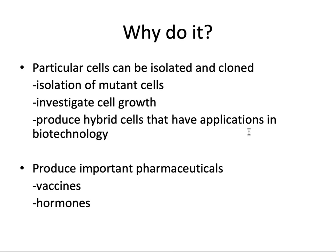Why do we do cell culture? A particular cell can be isolated and cloned. Uses include isolation of mutant cells, investigating cell growth, producing hybrid cells with applications in technology, and producing important pharmaceuticals like vaccines and hormones. We use cell cultures to check the effect of drugs on cell growth, to produce proteins, to test vaccines, and to study cell behavior — anything to do with cell study. Cell culture lets us control the environment and investigate the effects of different components on cell machinery and overall cell growth or function.